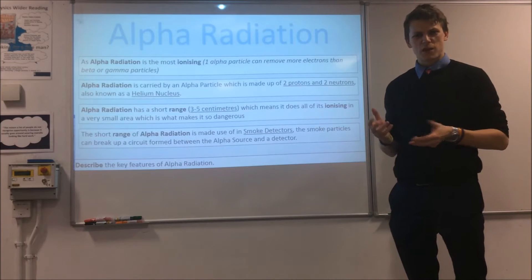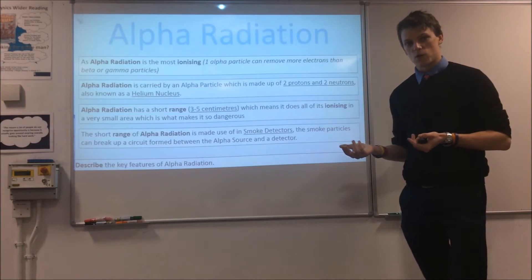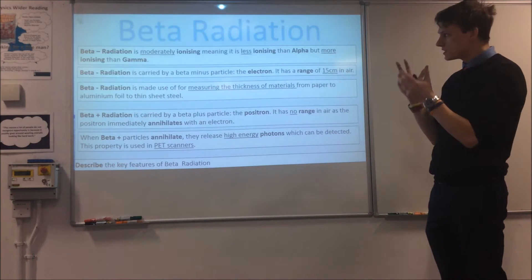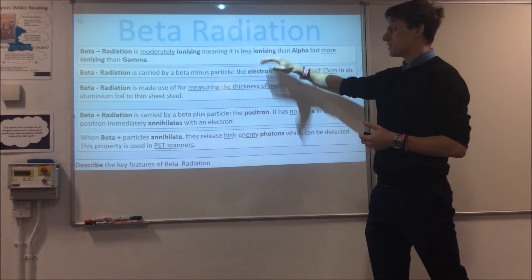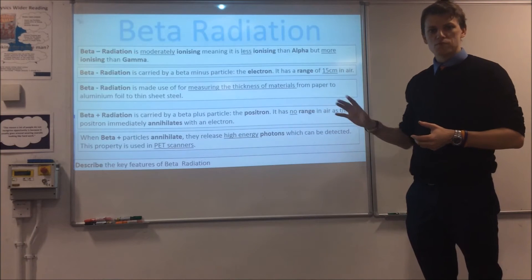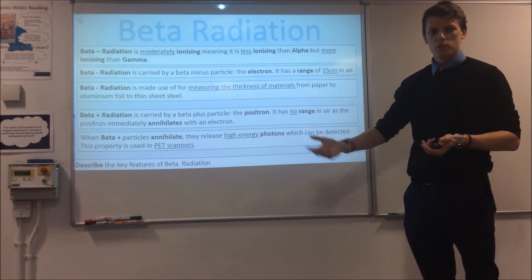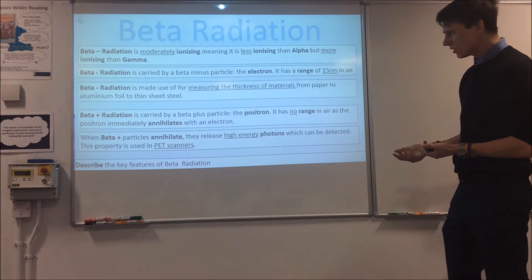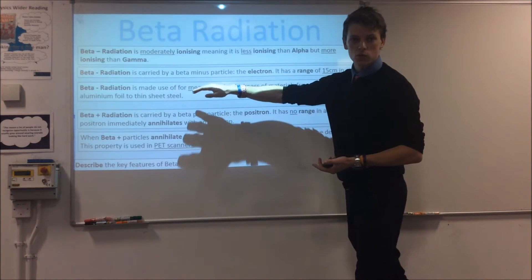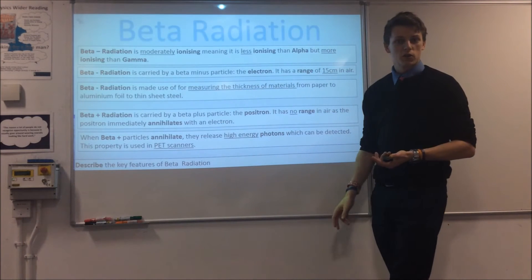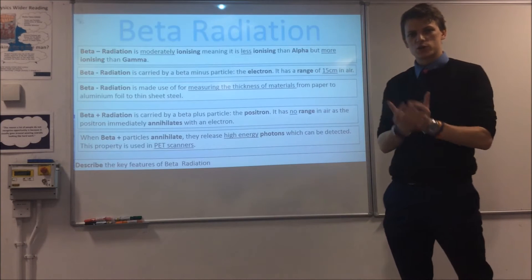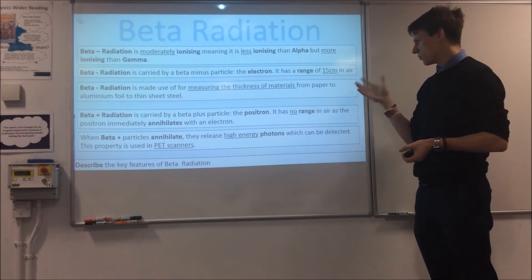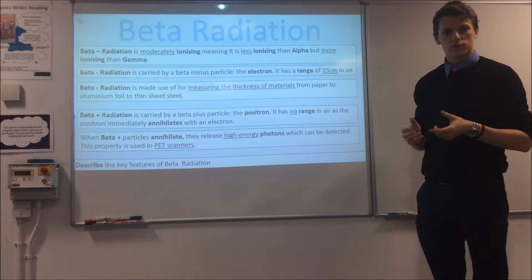Most smoke detectors use americium in them. Now, the second and third modes are often lumped together and called beta radiation overall. Starting with beta minus: both kinds of beta radiation are moderately ionising — not as effective as alpha, but much better than gamma in terms of the number of ionisations each particle can cause. Beta minus is so-called because it's carried by the beta minus particle, also called an electron, which is produced as a result of beta minus decay. It has a slightly bigger range than alpha — more like 15 to 20 centimetres in air.